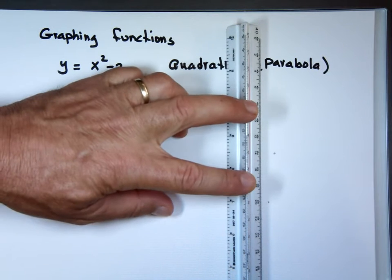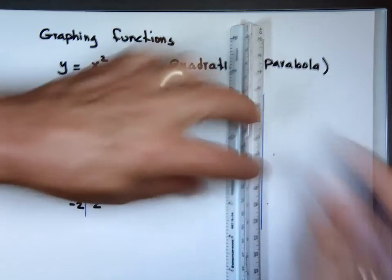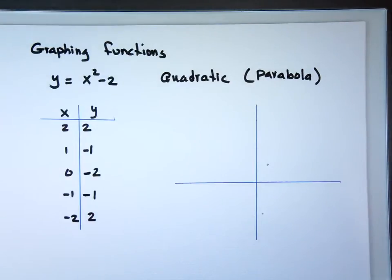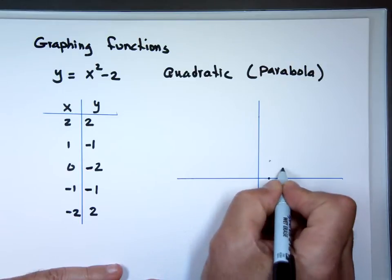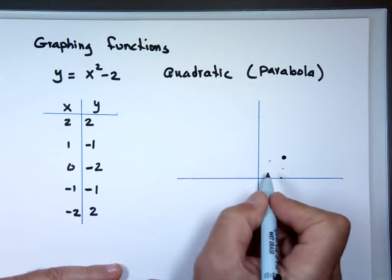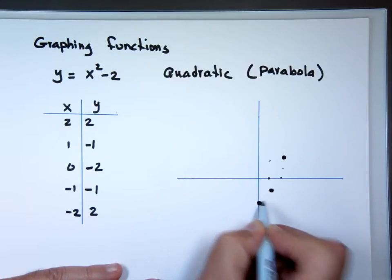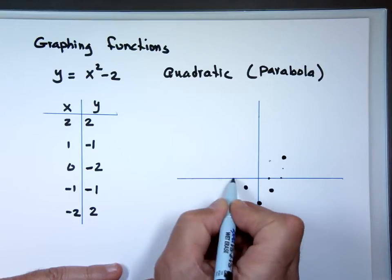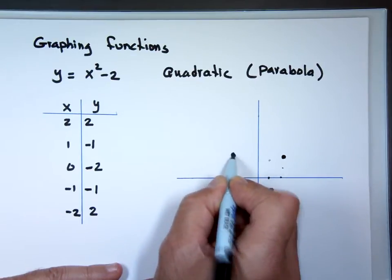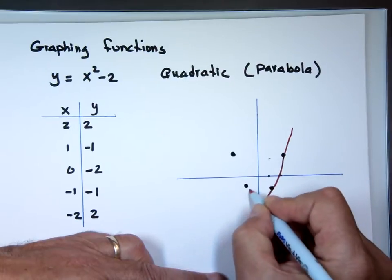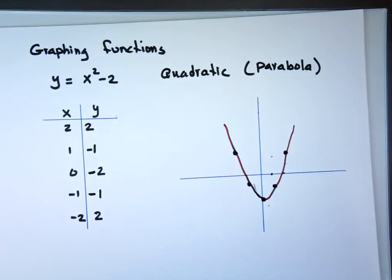Now let me graph these points. The points are: (2, 2), (1, -1), (0, -2), (-1, -1), and (-2, 2). Connecting these points, the graph looks like a parabola shape.